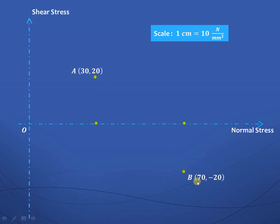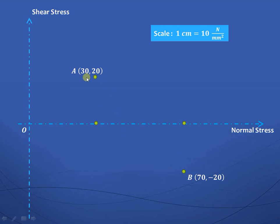For plane AB there is a normal tensile stress of 70 N/mm², so 70 ÷ 10 = 7 cm along X. The shear stress is negative — minus 20 — so the Y coordinate is −2 cm in the negative direction. Thus point B has coordinates (7, −2) according to the scale. In this way we have obtained two points: A at (3, 2) and B at (7, −2), both measured from O.